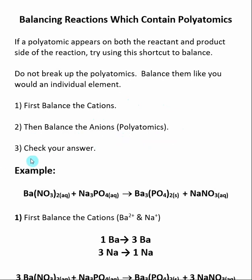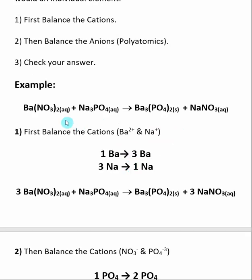Then in the final step, like most balancing questions, you can check your answer. Here is an example where we're reacting barium nitrate and sodium phosphate to make barium phosphate and sodium nitrate. The first thing we want to do is to balance the cations, which in this case are barium and sodium.